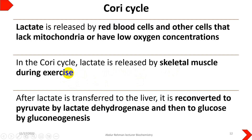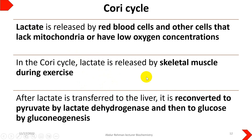During vigorous exercise, muscles need a lot of ATP, so muscle cells enhance the process of glycolysis, which requires more oxygen. However, oxygen will not be available in sufficient amounts, resulting in a hypoxic condition in the cell. Under hypoxic conditions, pyruvate will not enter the mitochondria but rather will be converted into lactate. So in skeletal muscle during exercise, lactate formation takes place.